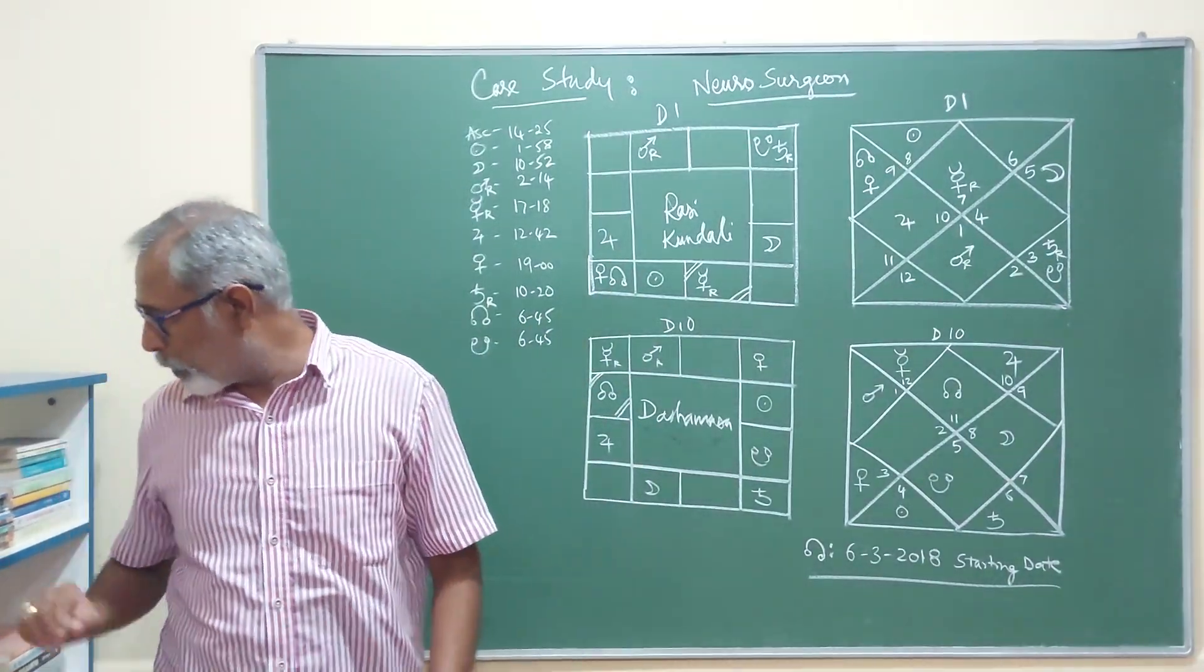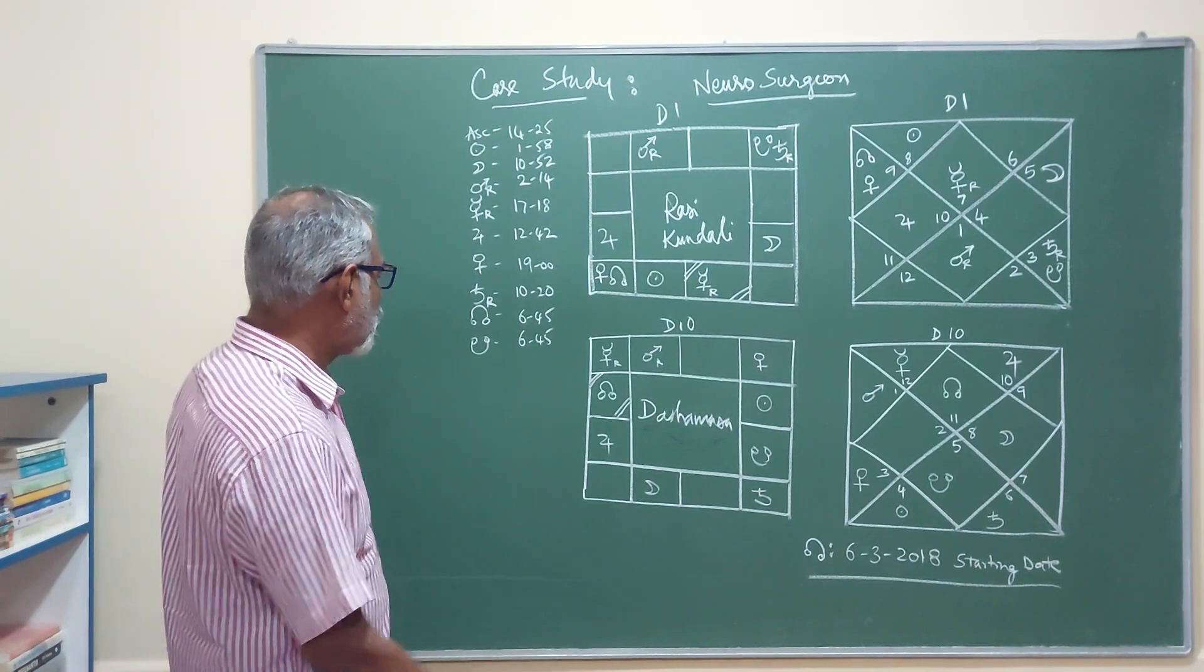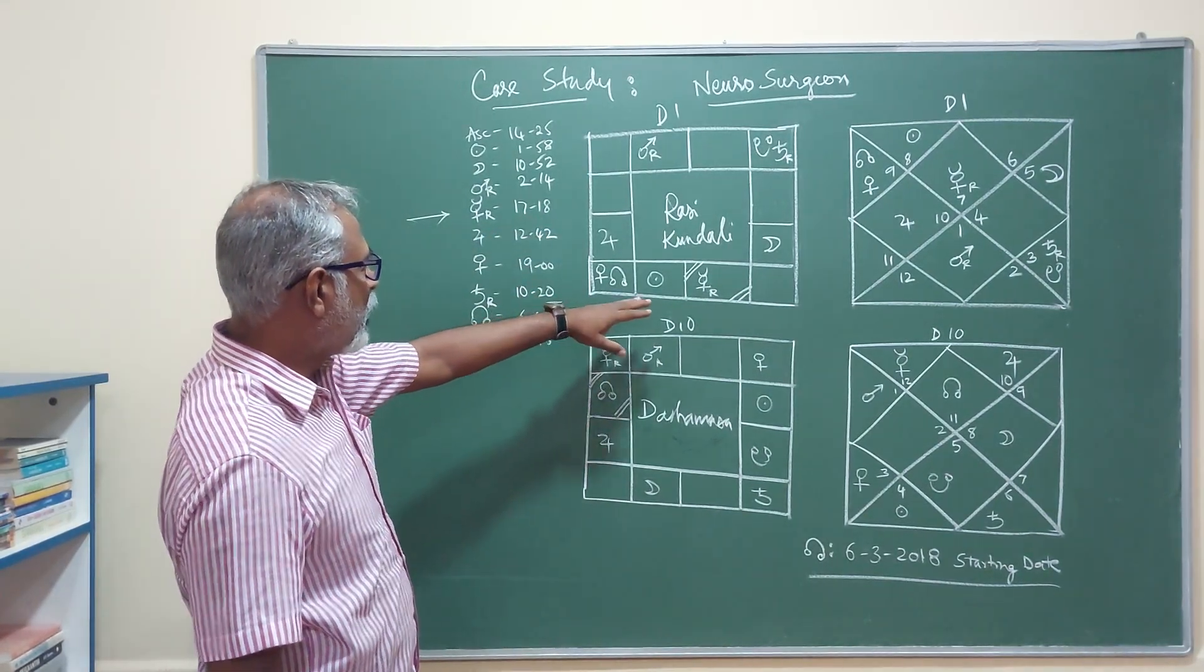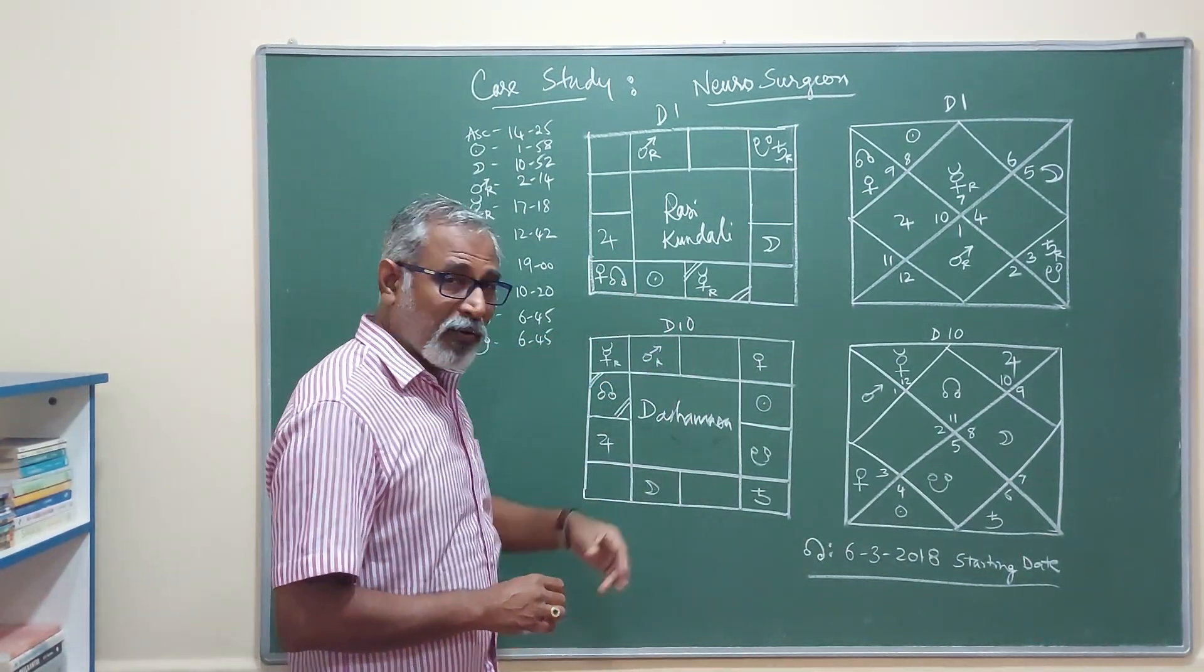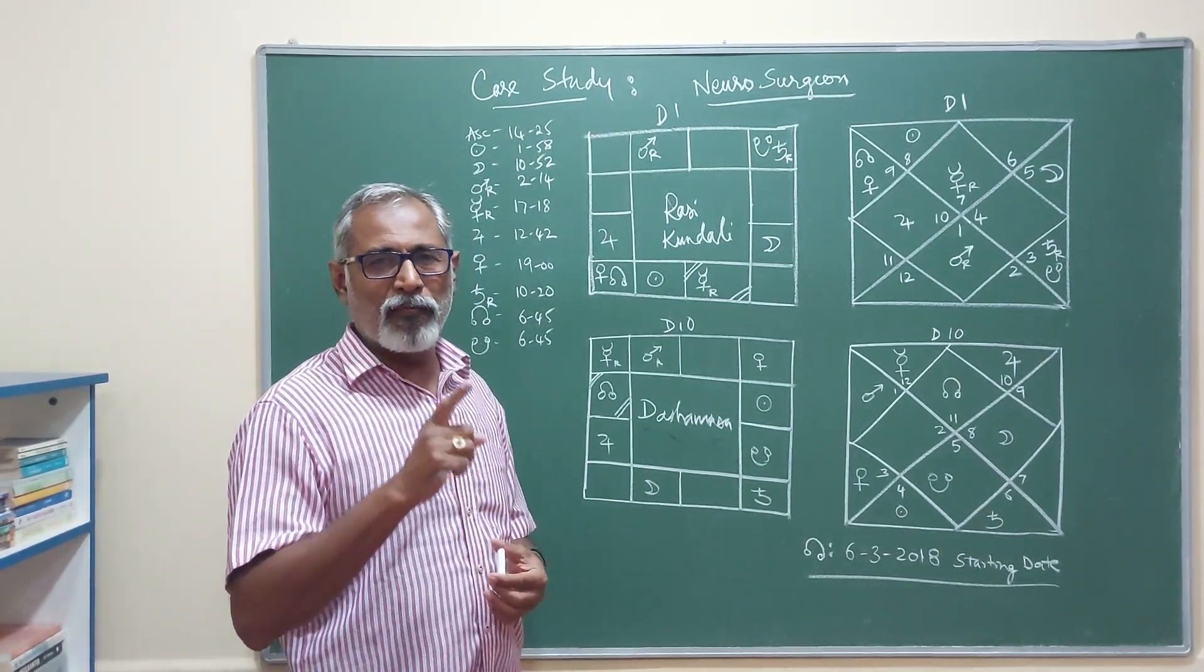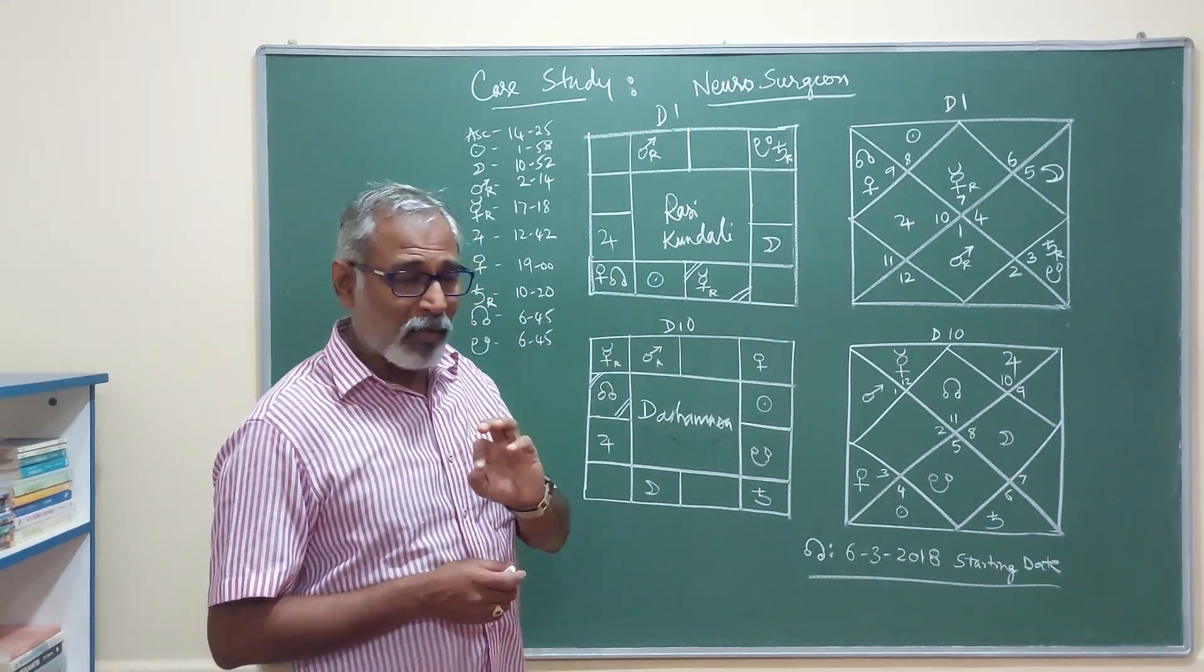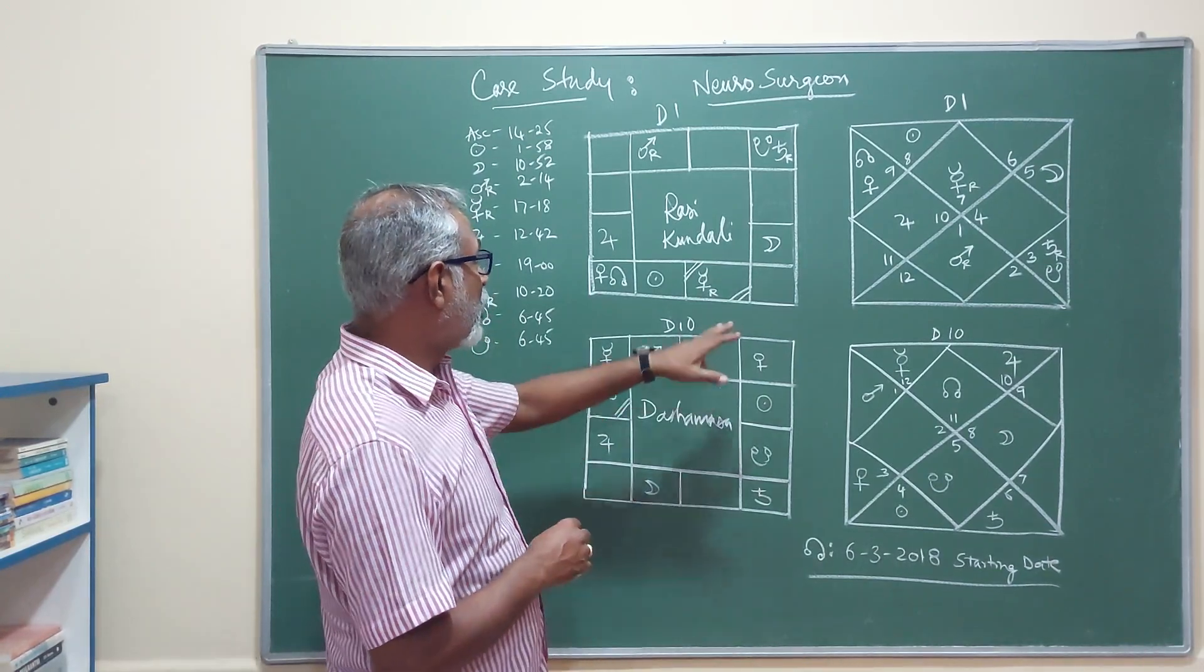For a person to become a neurosurgeon, the first most important thing is there should be a strong Mercury. Mercury is at 17 degrees 18 minutes, placed in the ascendant and retrograde. Mind it, a retrograde Mercury makes a person unemotionally strong when he is in his job if it is a yogakaraka.